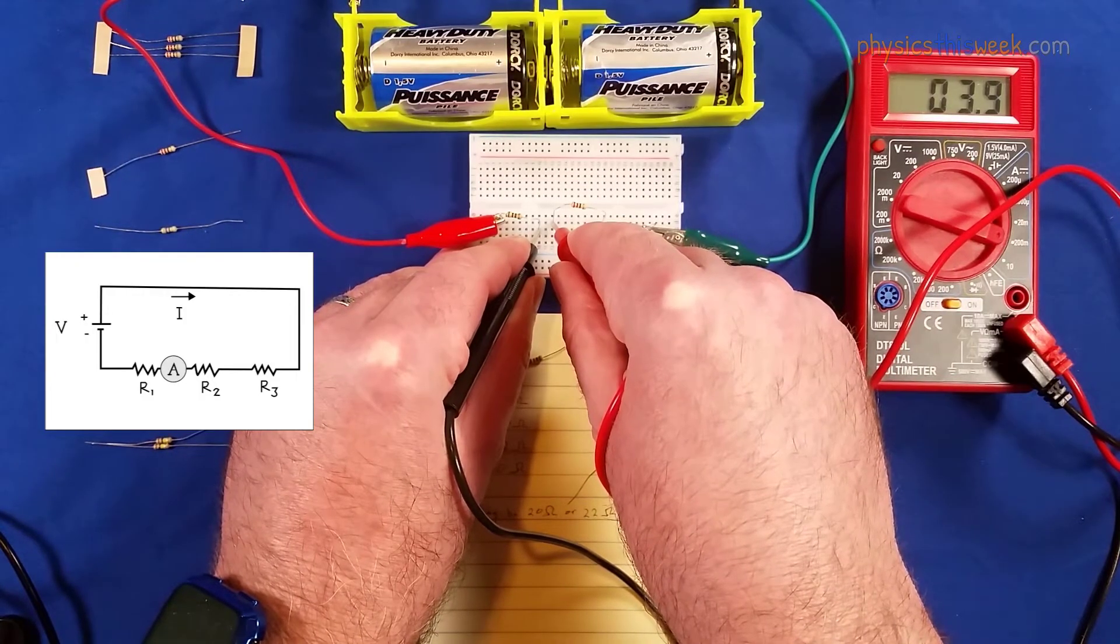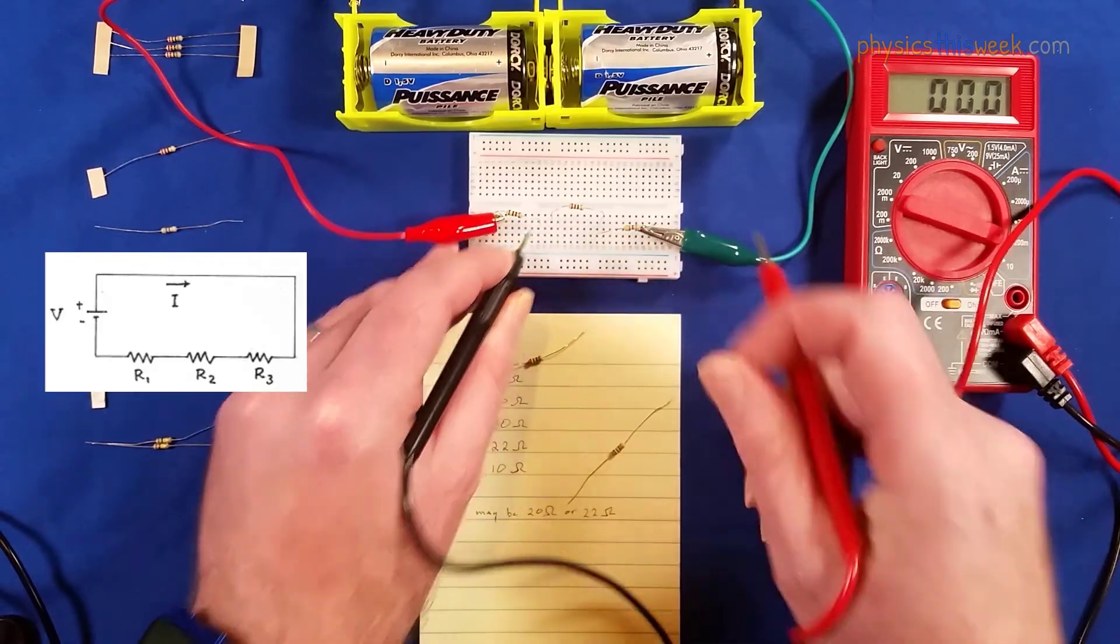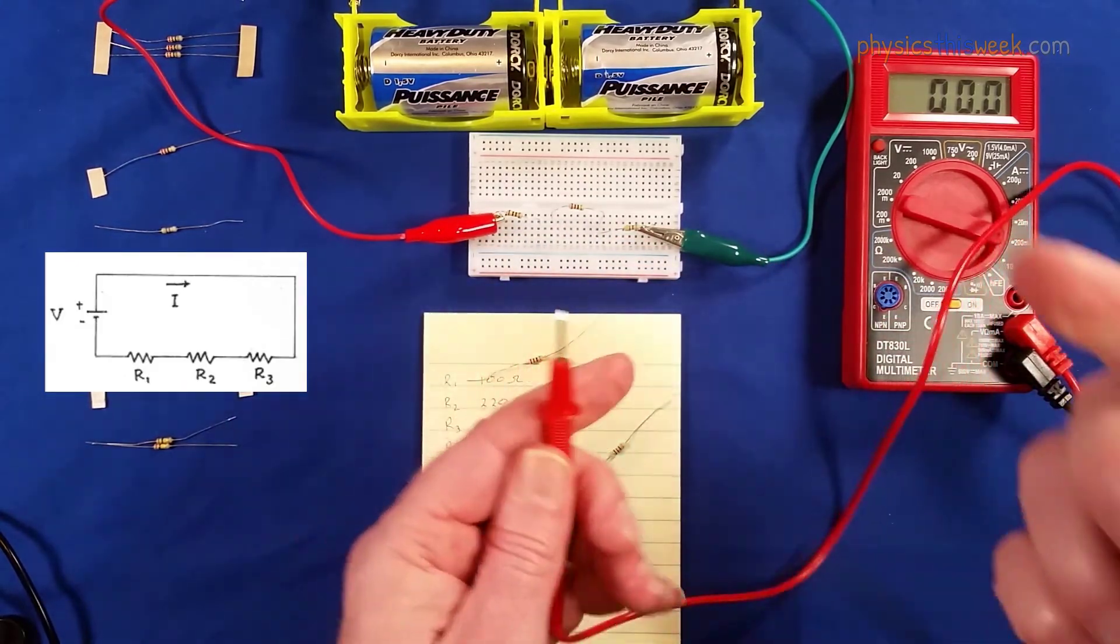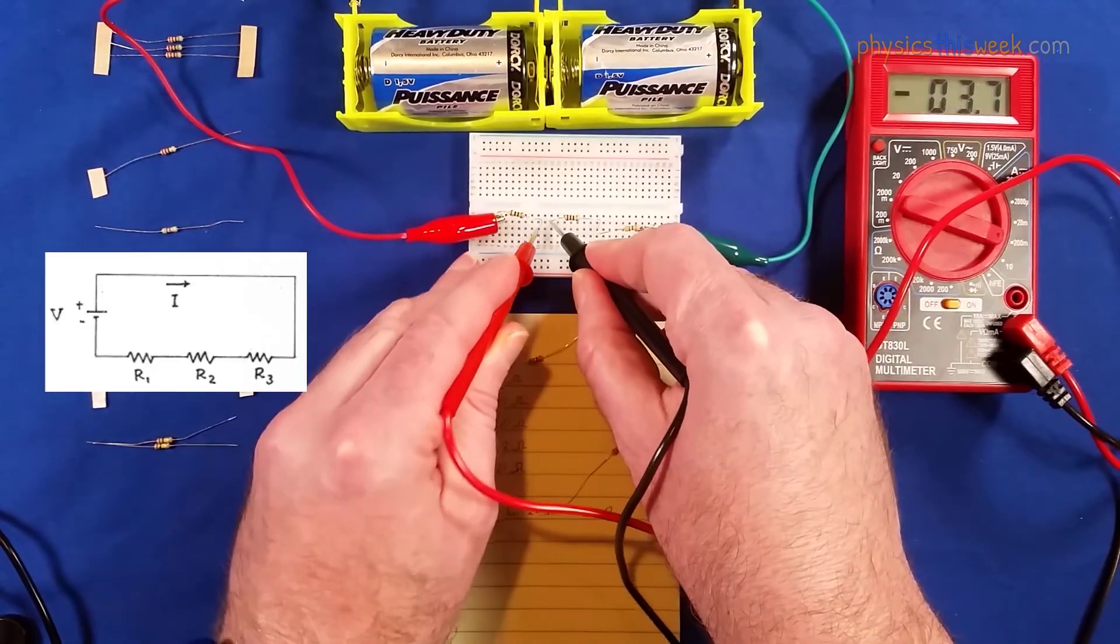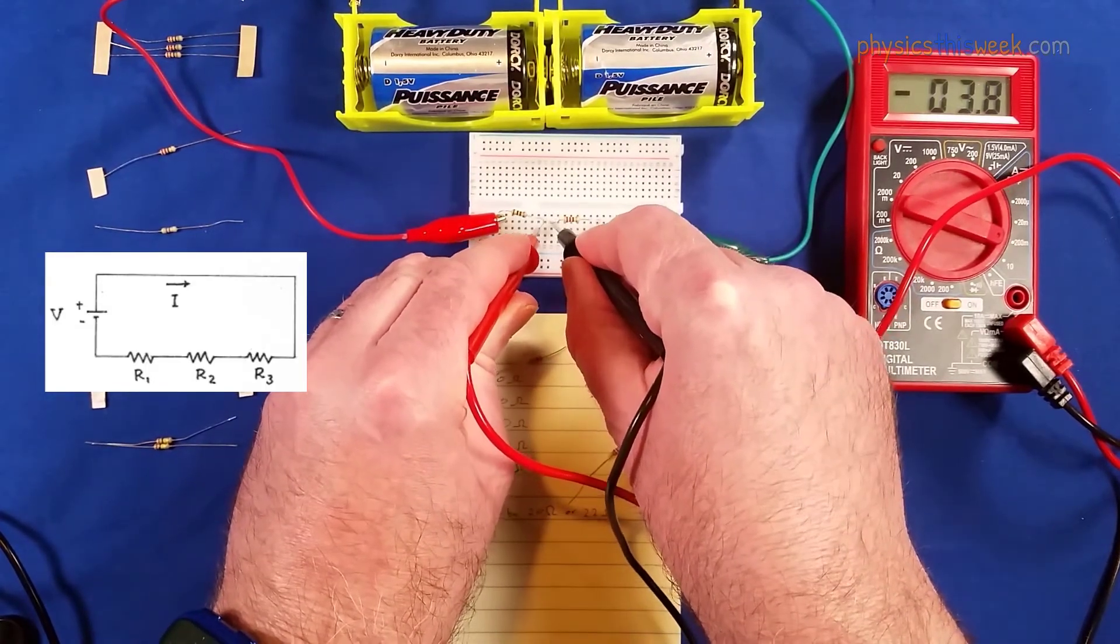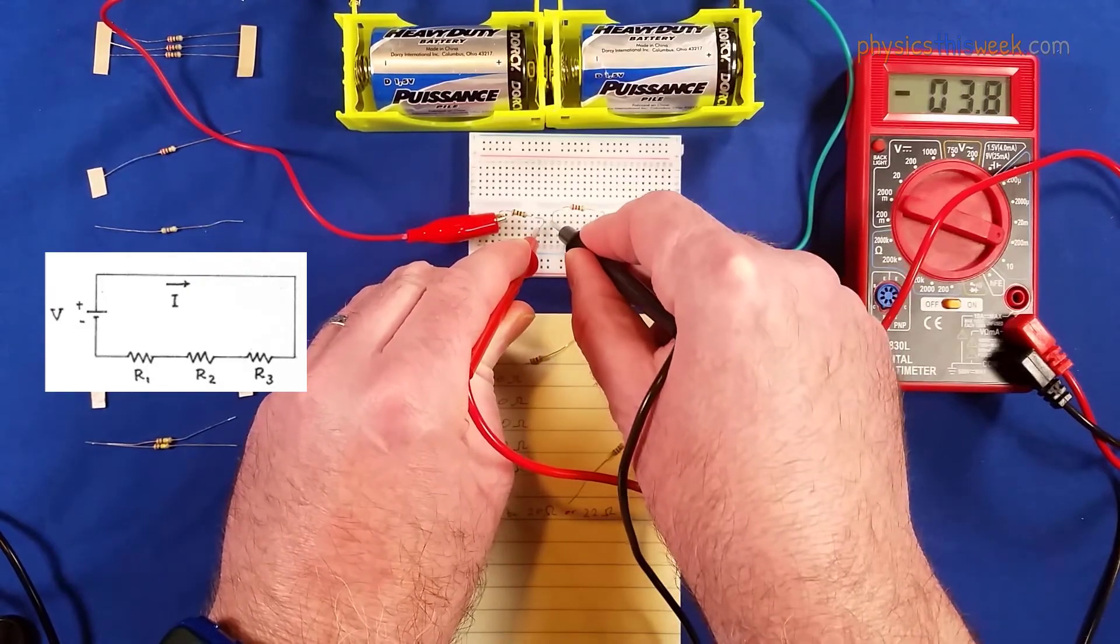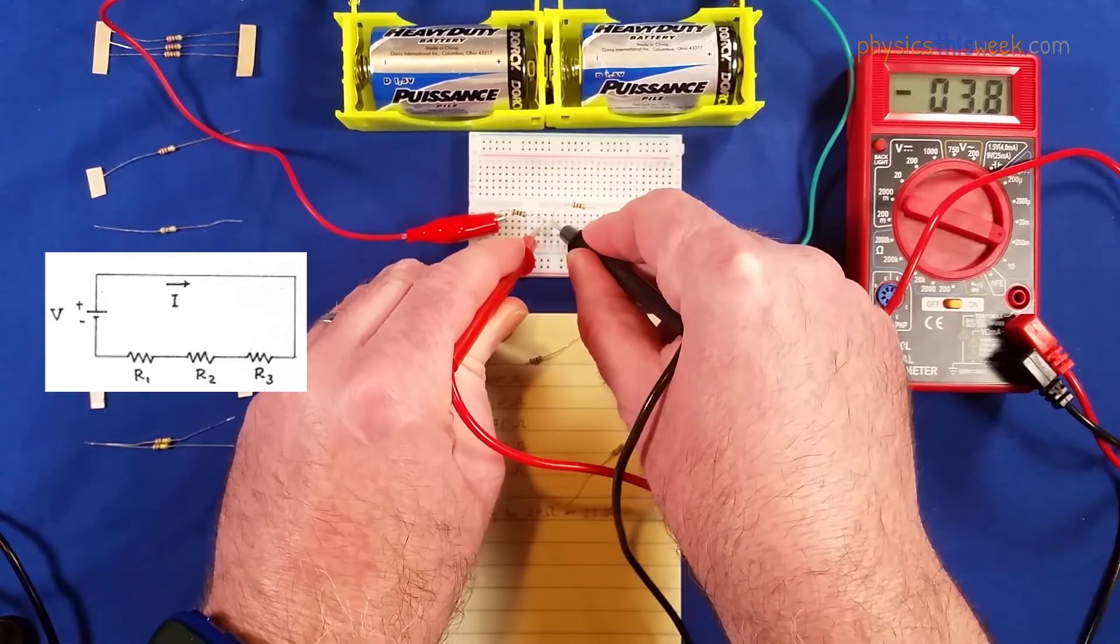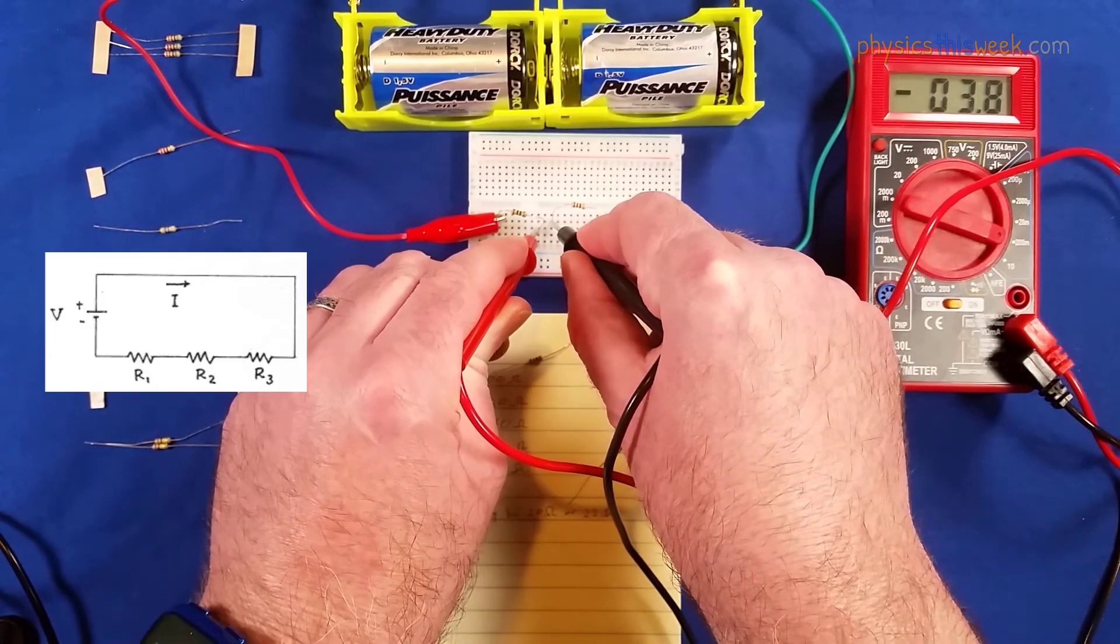Okay, now again just to show you, if I had mixed this or put these in the other way, should get just about the same value. Again, if we had a more precise multimeter, you might see a couple of extra decimal places there.